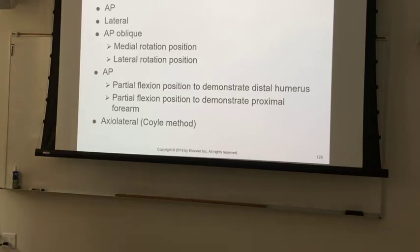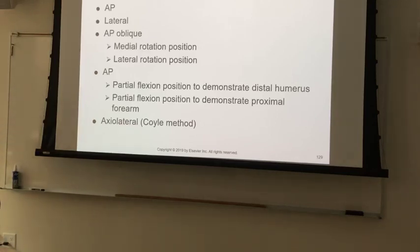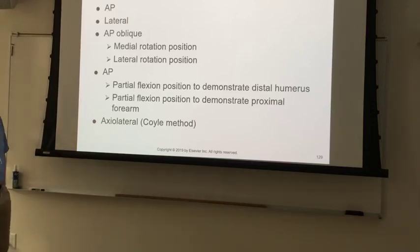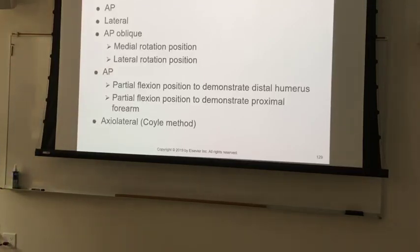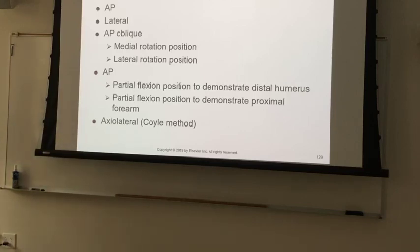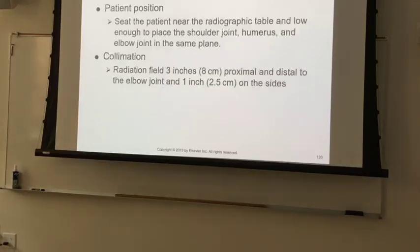For the elbow we'll do potentially many views: an AP, a lateral, two obliques — one with lateral rotation and one with medial rotation — and if the patient has damage and can't straighten the elbow, some special views as well. The positioning for AP and lateral elbow is really just like the AP and lateral forearm positioning. The only differences are central ray location and collimation.